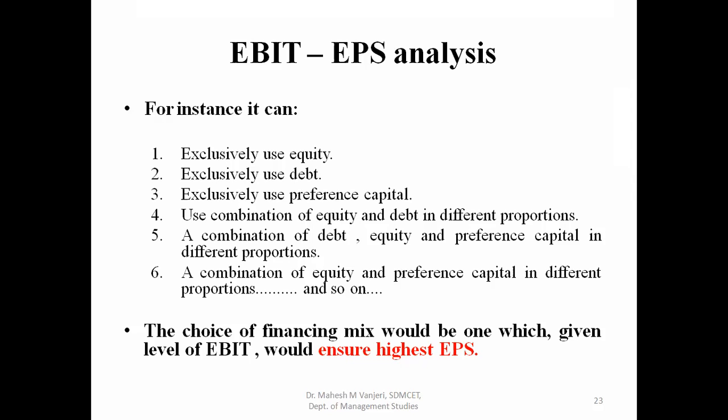Can somebody recall why we should choose that alternative financing mix which ensures highest earnings per share? The finance manager must choose the alternative method of financing that ensures highest earnings per share because the objective of financial management is to ensure shareholders' wealth maximization, and the only method to maximize shareholders' wealth is by ensuring highest earnings per share.